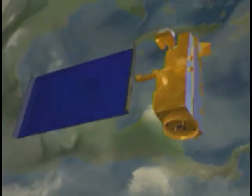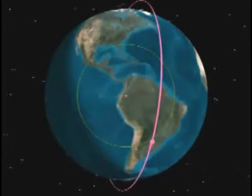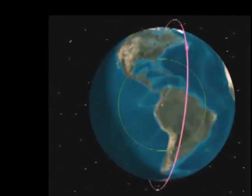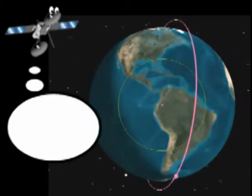When a satellite is flying around the Earth, it can only talk to a ground station when it can see it. Satellites can only see the ground station when they fly right over it. Many satellites are only right over the ground station for about 15 minutes each time they go around the Earth.